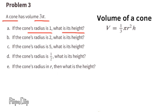Problem number three: A cone has volume 3 pi. The formula for the volume of a cone is 1/3 times pi times r squared times h. Part a: If the cone's radius is 1, what is its height? When the radius is 1, we substitute r with 1. r squared equals 1. Since the volume is 3 pi, we rewrite the equation as 3 pi equals 1/3 times pi times 1 times h.